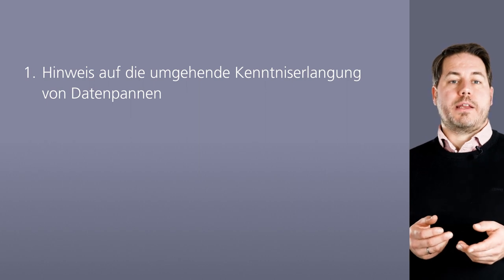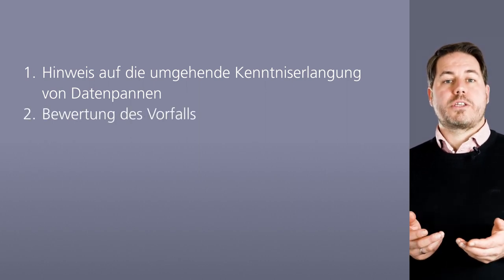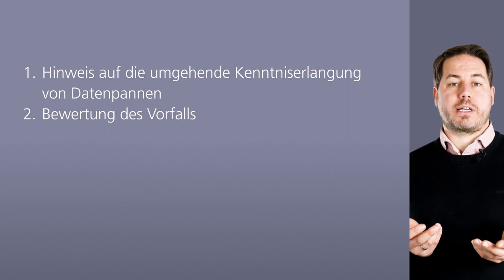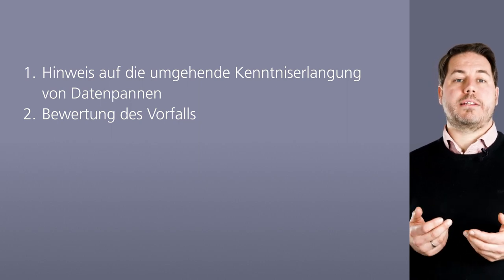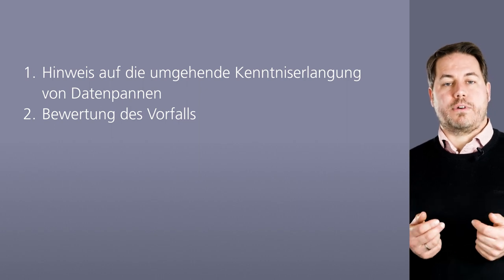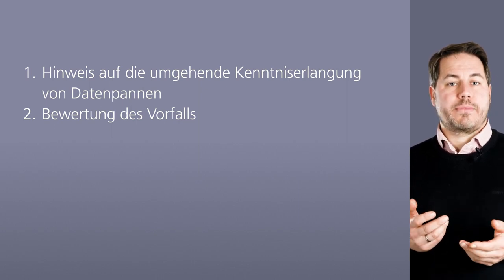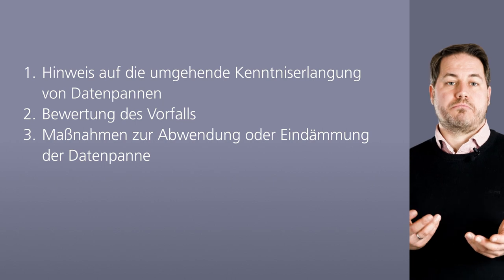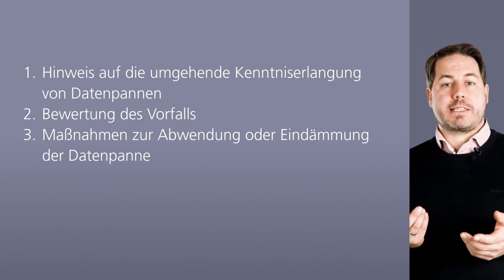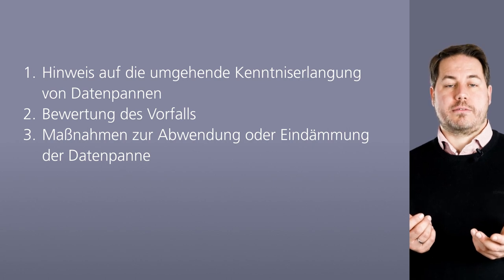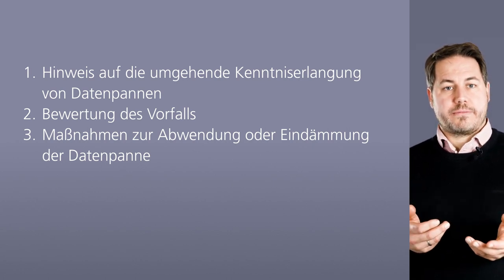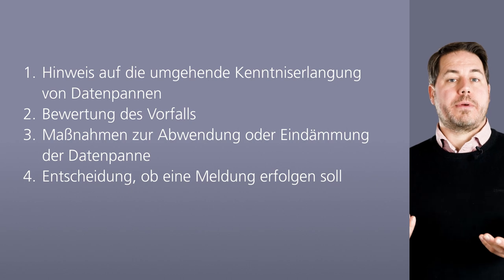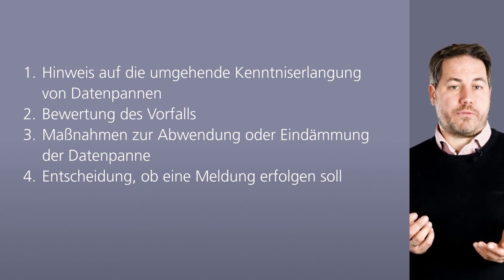2. Es muss eine Bewertung des Vorfalls erfolgen. Diese sollte durch die Datenschutzbeauftragte oder den Datenschutzbeauftragten erfolgen. Mögliche Kriterien zur Ermittlung des Risikos einer Datenschutzpanne sind unter anderem die Kategorien der betroffenen Daten oder die Art der Verletzung. 3. Weiterhin sollten Maßnahmen zur Abwendung oder Eindämmung der Datenpanne getroffen werden, beispielsweise mit einer Prüfung, mit welchen Maßnahmen sich Auswirkungen der Datenpanne minimieren lassen. 4. Danach wird die Entscheidung gefällt, ob eine Meldung erfolgen soll, also konkret, ob eine Meldung an die Aufsichtsbehörde oder an den Betroffenen erfolgen soll.